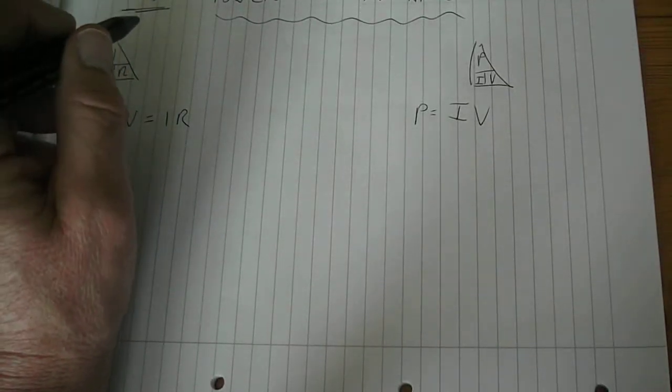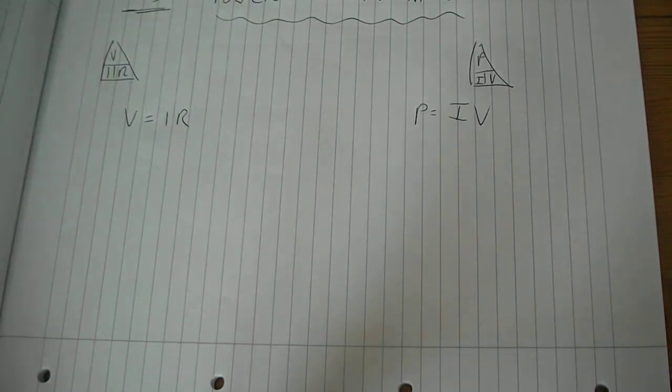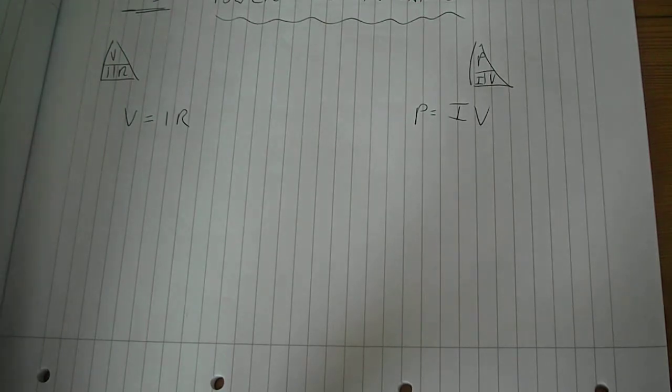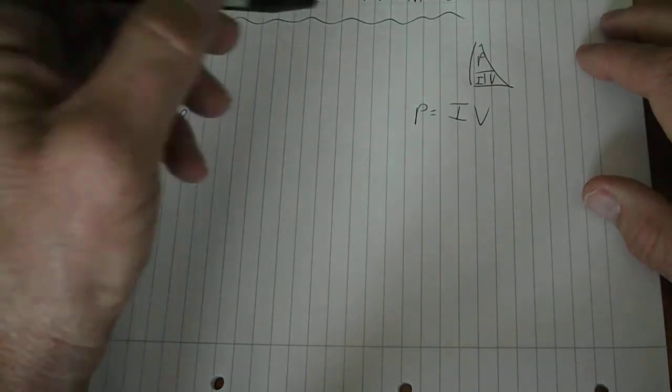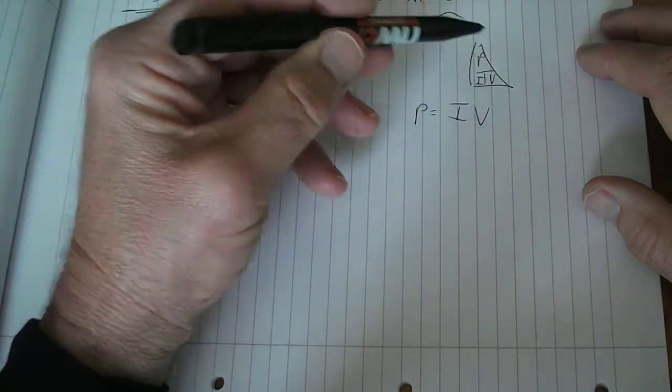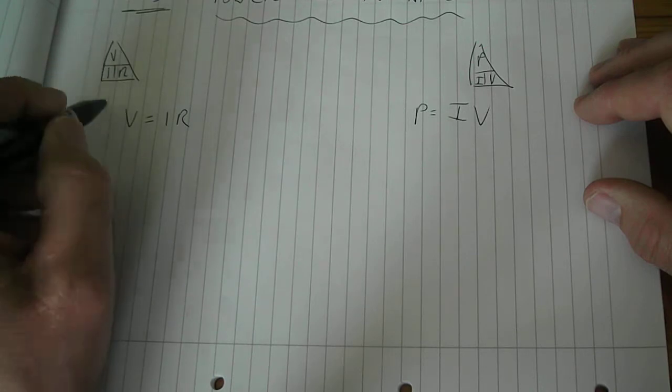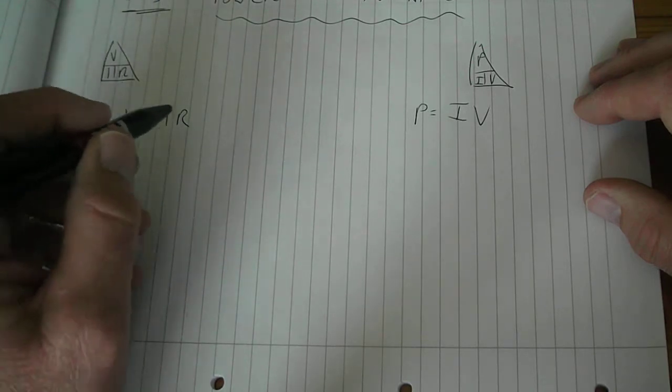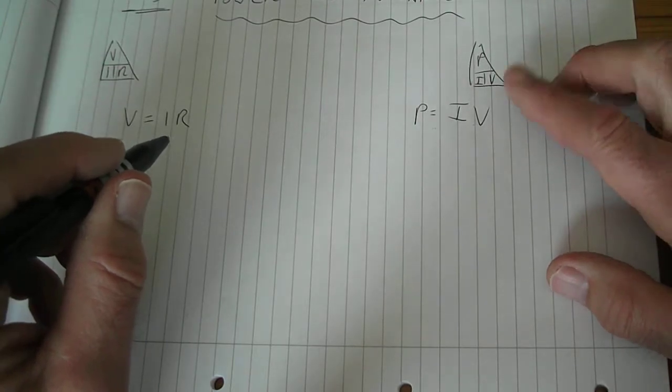Right, hello again and we're moving on now to Unit 663, which is power loss in cables. You remember from Ohm's law the Ohm's law triangle, and then we have the power triangle as well. From here we know that V equals IR, and we know that P equals I times V from the power side.